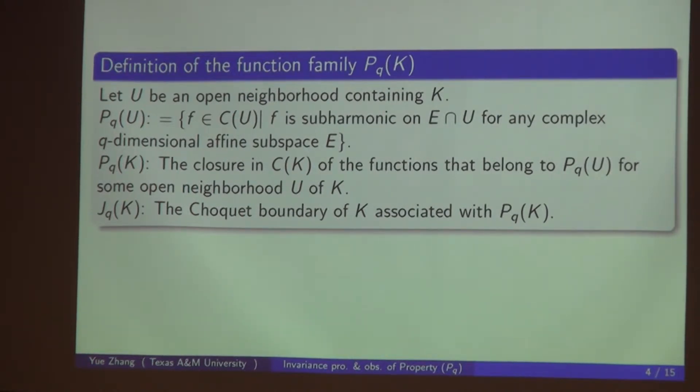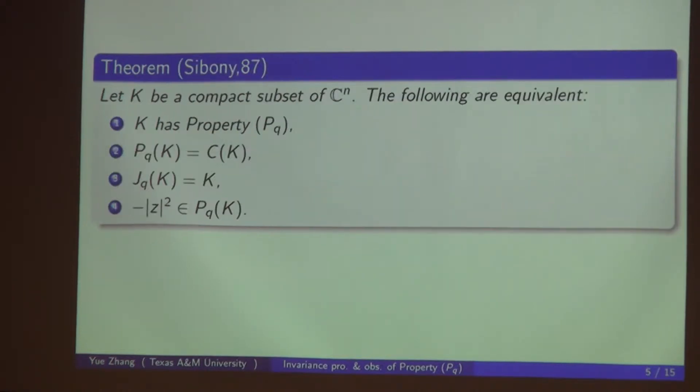P_Q(K) is the closure in the continuous functions of K of those functions which belong to P_Q(U), and of course you can select U as you wish. J_Q(K) is the Choquet boundary of K associated with P_Q(K). The Choquet boundary of some compact set are those points in K such that the only Q-dimensional measure is the mass point at this point.